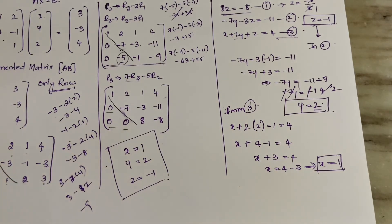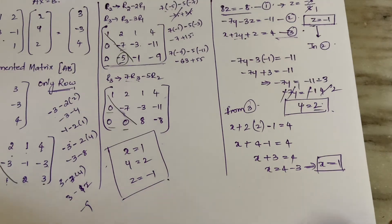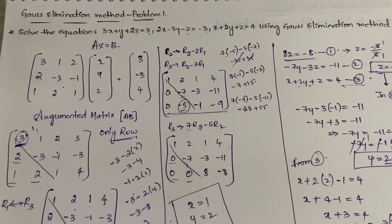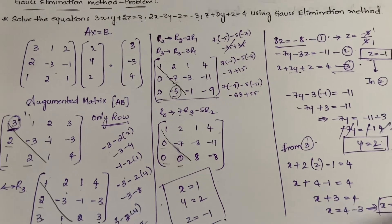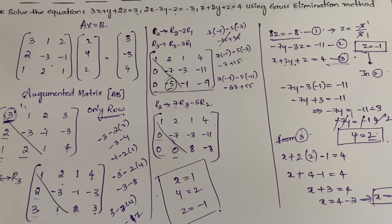This is how you solve the Gauss elimination method. Let me verify: x = 1, y = 2, z = -1 — yes, correct. The steps are simple: first write Ax = b, then write the augmented matrix, then get the echelon form, then form the equations, solve those equations and you will get the values for x, y, z. Gauss elimination is a very important concept.